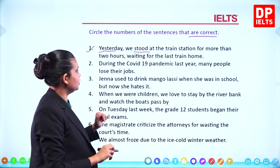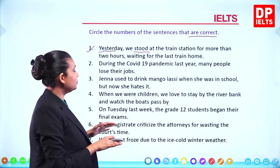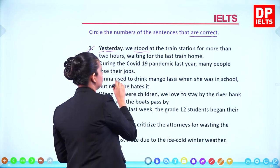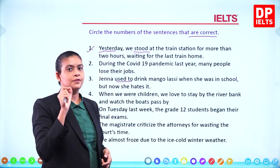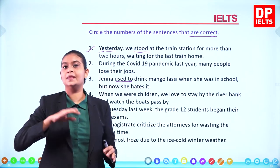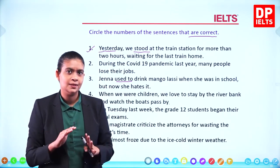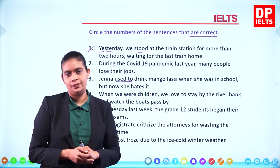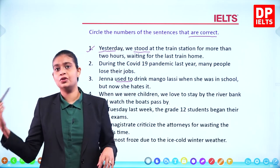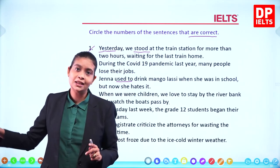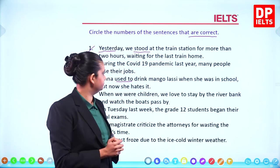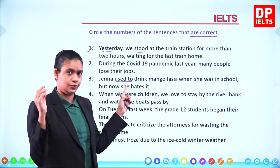Sentence three: 'Jenna used to drink mango lassi when she was in school, but now she hates it.' 'Used to' is a form of the past tense — it means in the past I did it, but I don't do it anymore. Example: 'I used to live in Gaul' means in the past I lived there, but now I don't. So sentence three is correct.